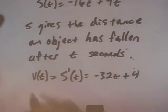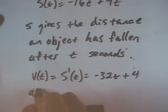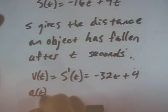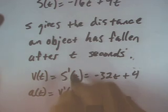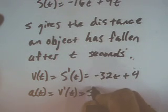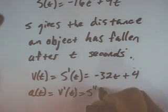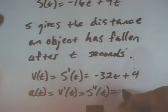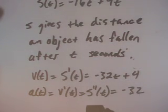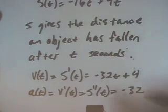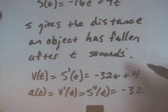For the acceleration of the object, we take the derivative of the velocity, which is the same as taking the second derivative of the position function. We get the constant function negative 32, so it has constant acceleration of negative 32 — the negative indicating that the object is falling.